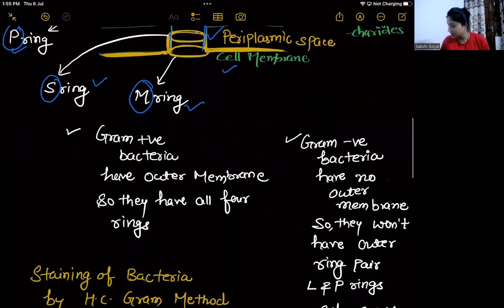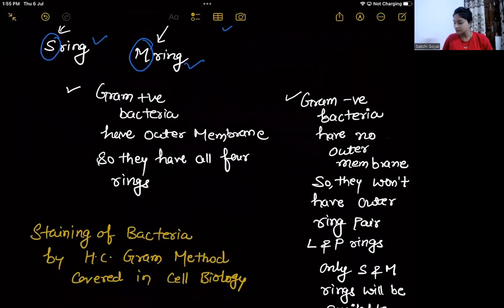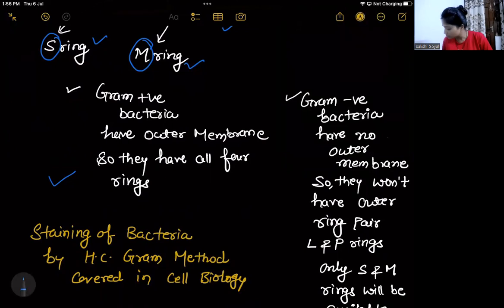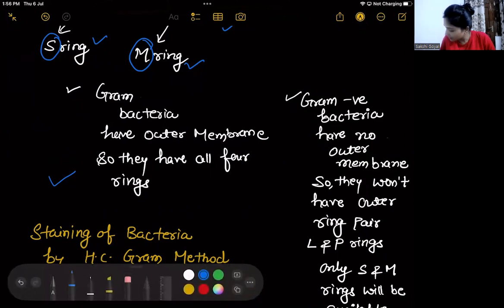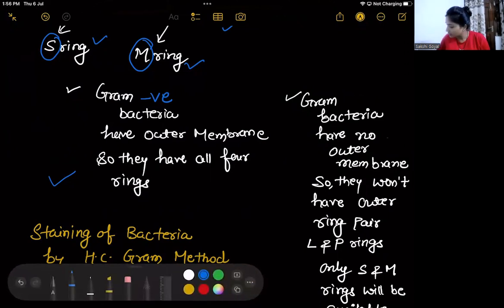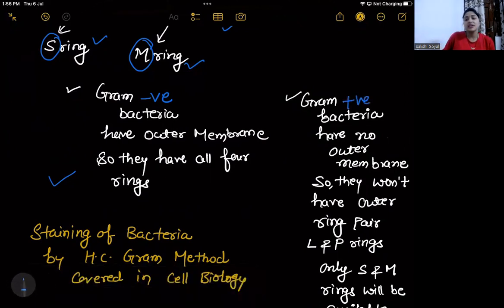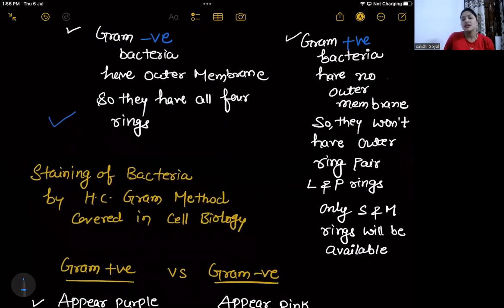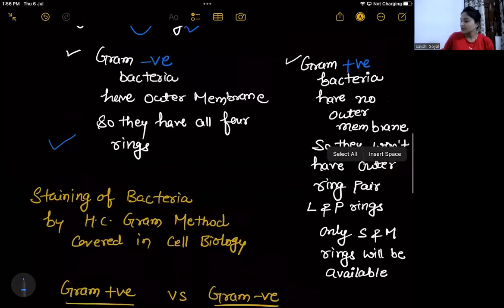So to clarify: gram-negative bacteria have an outer membrane and therefore have four rings (L, P, S, M — both ring pairs). Gram-positive bacteria do not have an outer membrane, so they lack the outer ring pair (L and P). Only the S and M rings are available in gram-positive bacteria.